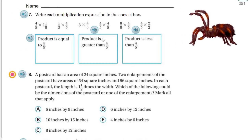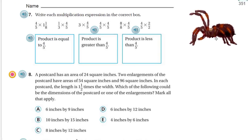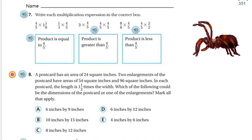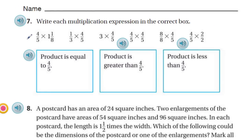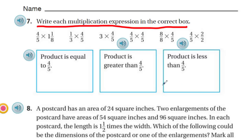Welcome — am I on the wrong page? No, I am on the right page. This is chapter seven, the review test, and we're on number seven. It says write each multiplication expression in the correct box. Product is equal to four-fifths.